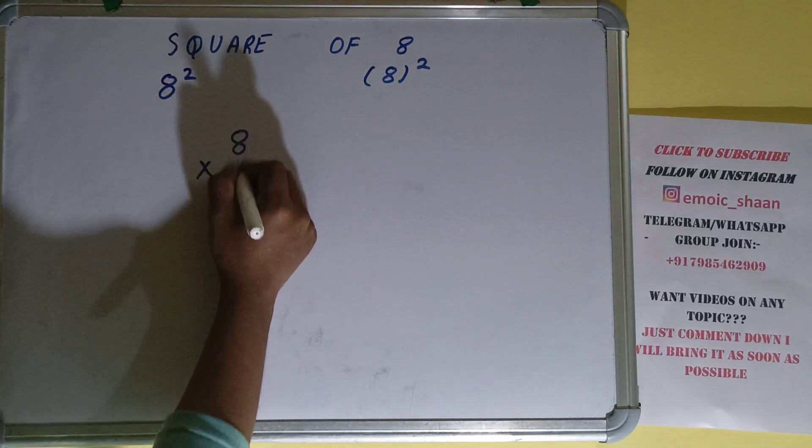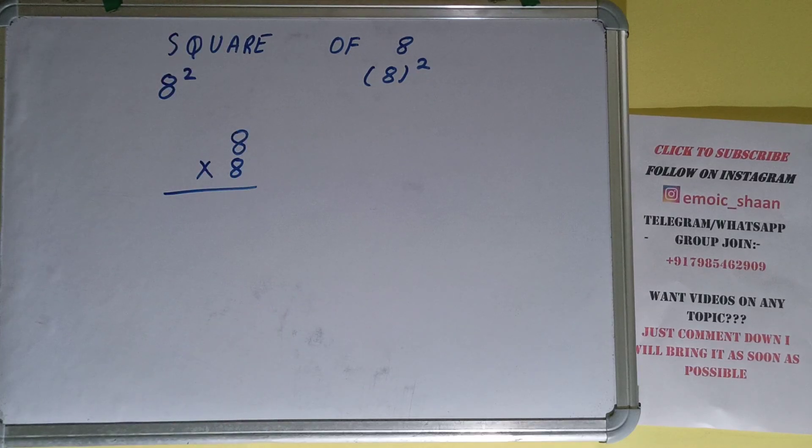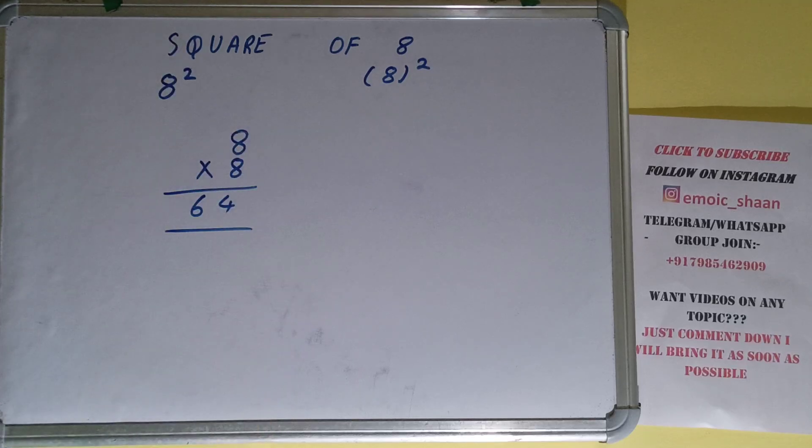8 into 8 is 64. That will be your answer, so we can say that the square of the number 8 is 64. So this is all.